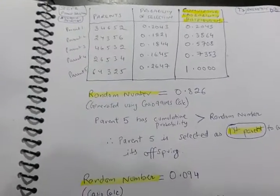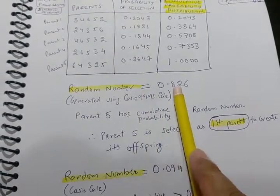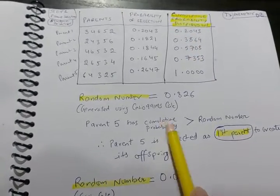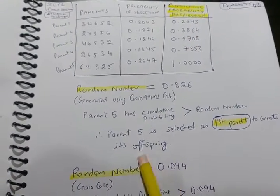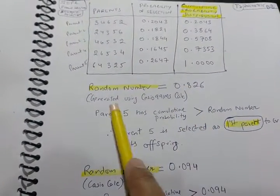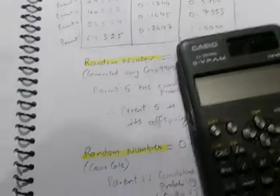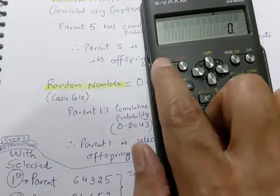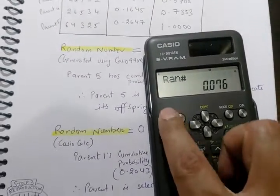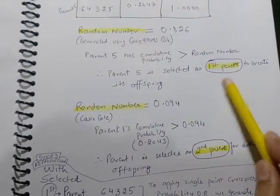We have got the table with us. Now let us generate a random number to choose a parent. The random number is greater than one of the cumulative figures, and that will be chosen as the first parent to create an offspring or child. How are we generating these random numbers? We are using Casio calculator which is allowed in exam. Press shift and the random function and press equal - random numbers start popping out.